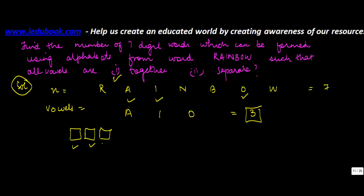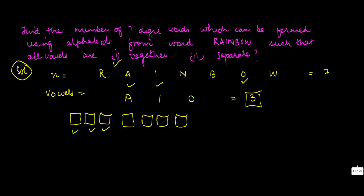The first thing is how many words can be formed by the use of the word RAINBOW. Let's count these three vowels as one object.